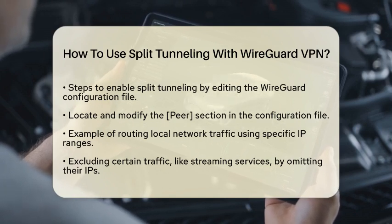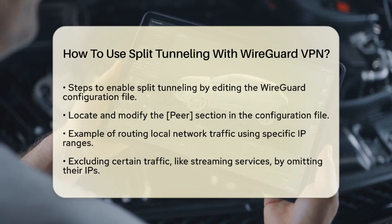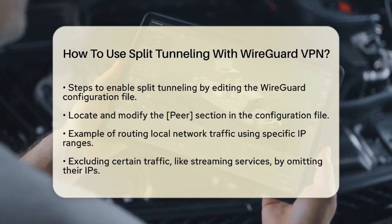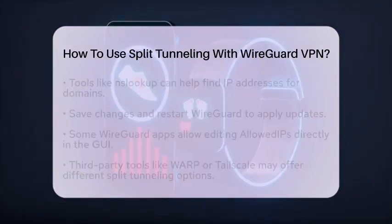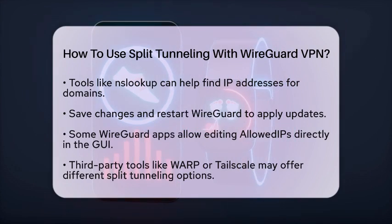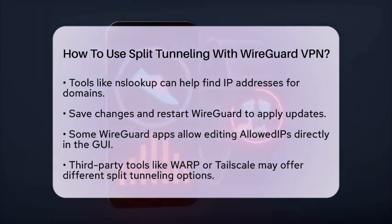If you want to exclude certain traffic, like streaming services, you will need to omit their IP ranges from AllowedIPs. You can use tools like nslookup to find the IP addresses of those domains. After making your changes, save the file and restart WireGuard to apply the updates.